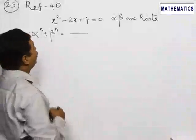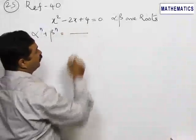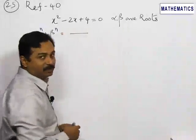Now let us refer to question number 40. It is given that x² - 2x + 4 = 0, and α and β are the roots.